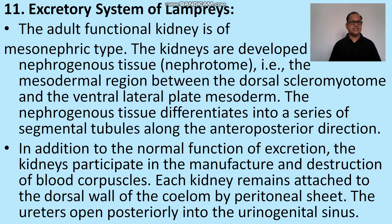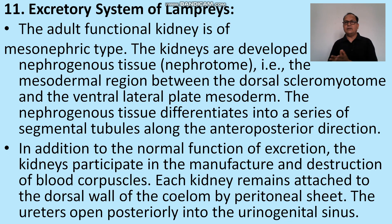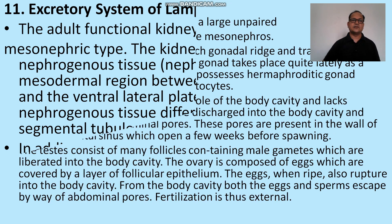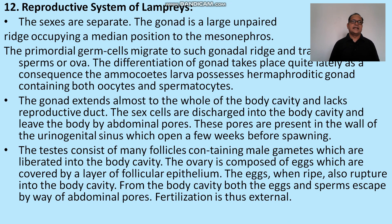Excretory system: a mesonephric type kidney is present. The kidney has Bowman's capsule and glomerulus for filtering blood. Waste products are collected by the ureter and expelled from the body via the urogenital aperture. Each kidney maintains its dorsal wall within the coelom by a peritoneal sheet. The ureter opens posteriorly into the urogenital sinus or aperture.